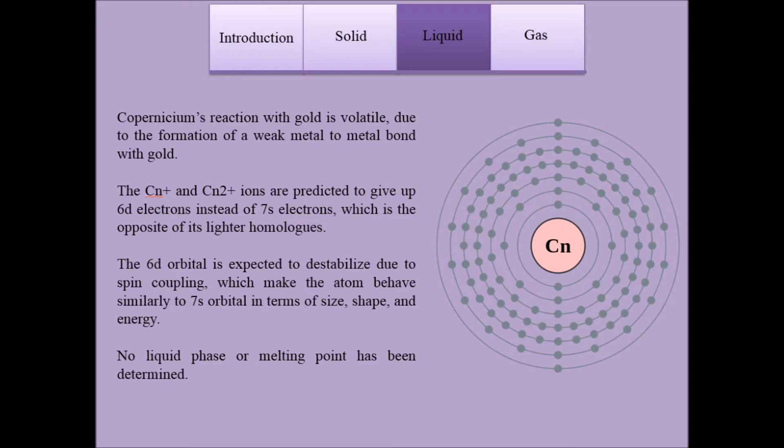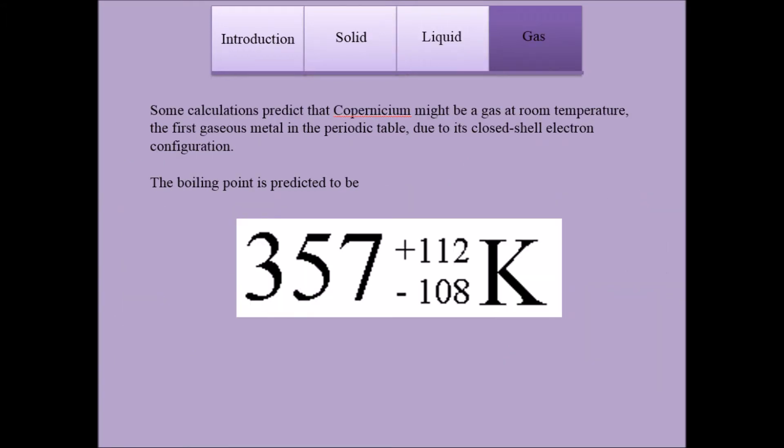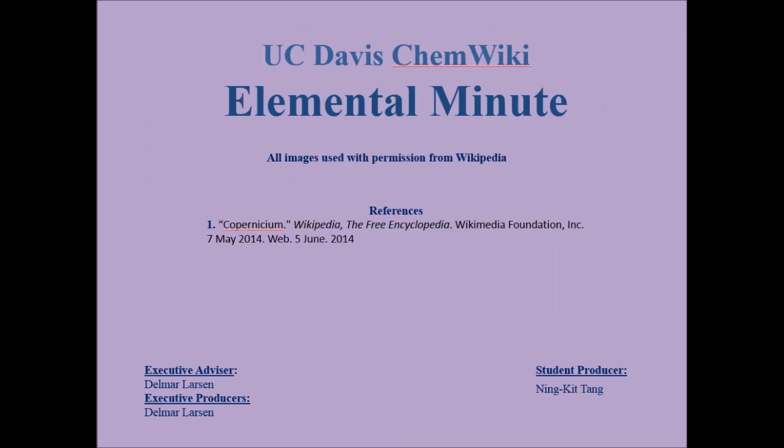No liquid phase or melting point has been determined. Some calculations predict that copernicium might be a gas at room temperature, the first gaseous metal in the periodic table due to its closed-shell electron configuration. The boiling point is predicted to be 357 plus 112 or minus 108 Kelvin.